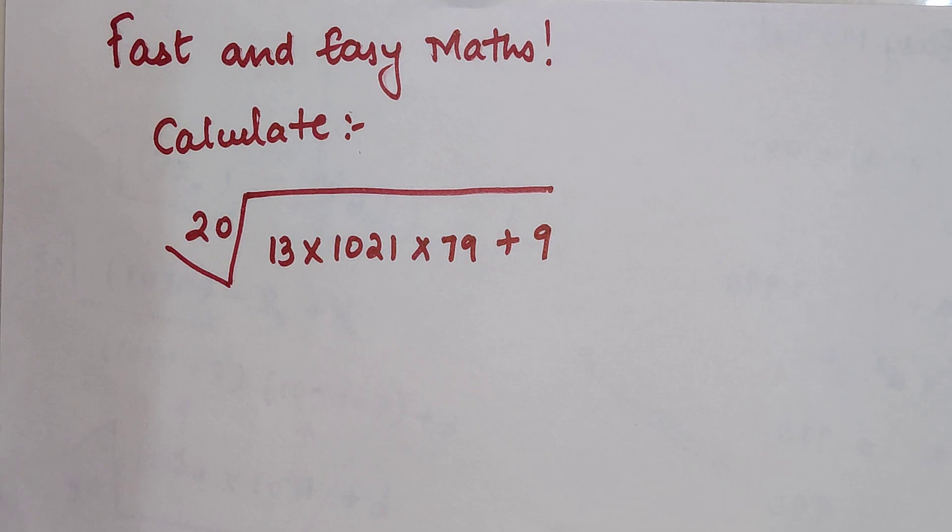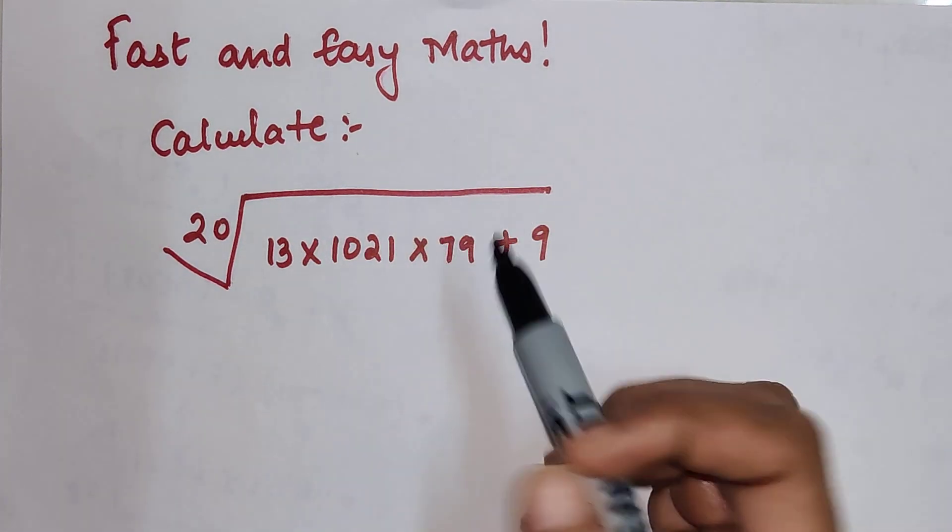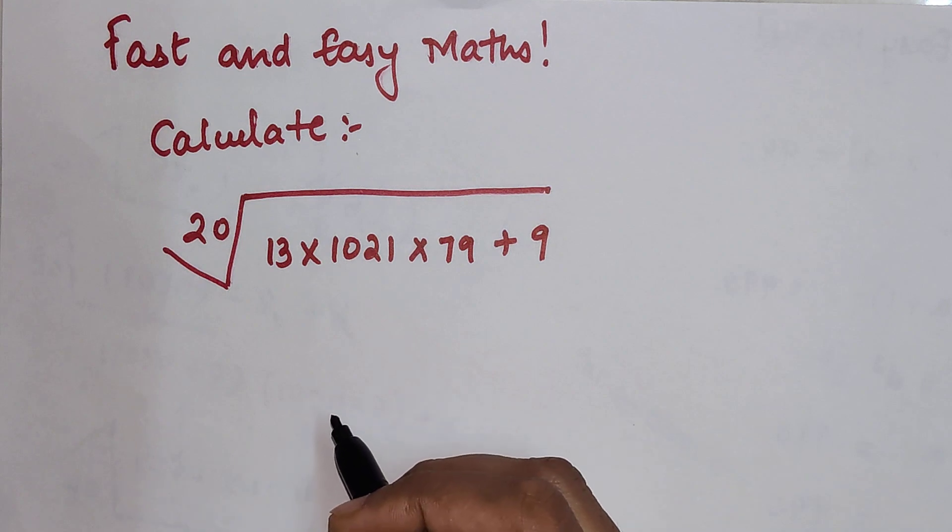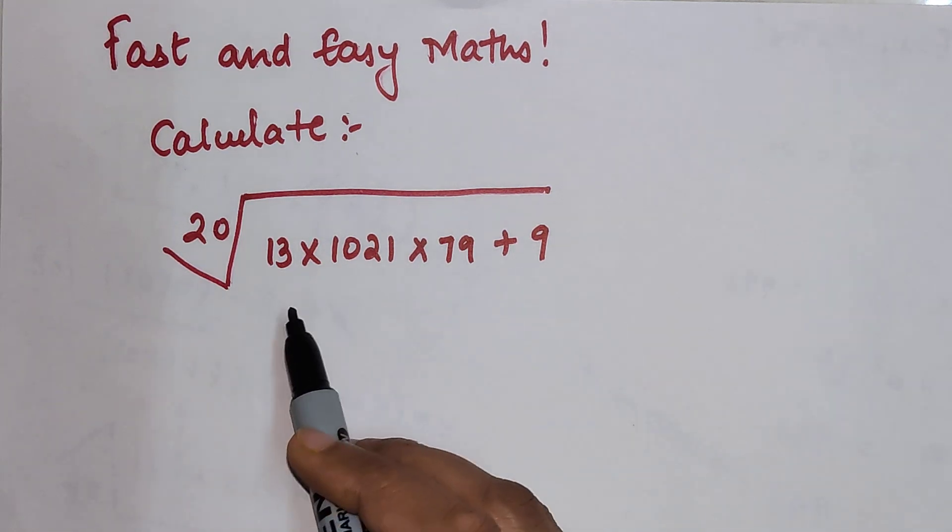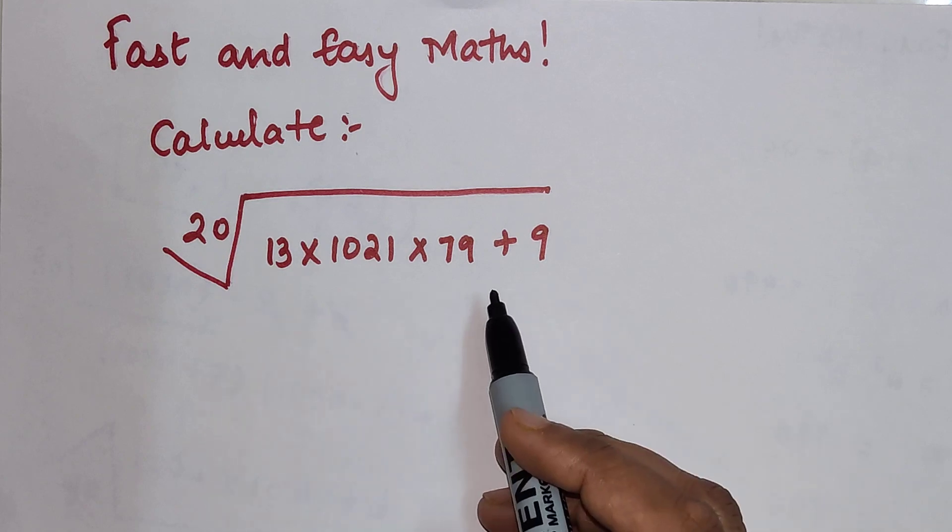Welcome everyone to my channel, Fast and Easy Maths, which is dedicated to give you tips and tricks related to mathematics. Today we are going to calculate the 20th root of 13 × 1021 × 79 + 9.